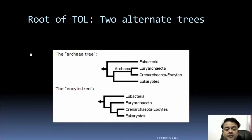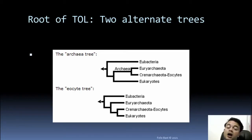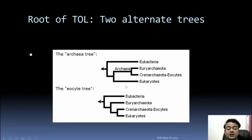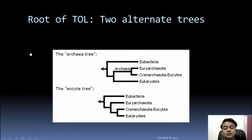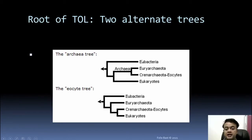Looking at the root, there are two kinds of root: the Archaea tree and the Eocyte tree. In both cases there is no conflict that eukaryotes are more closely related to Archaebacteria rather than Eubacteria. Eubacteria means the real bacteria, like E. coli, while Archaebacteria live in harsh conditions — though Archaebacteria are also found in our gut and on our skin.